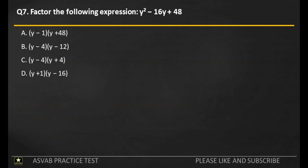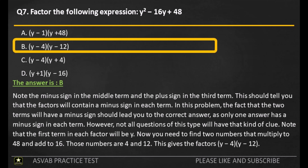Q7. Factor the following expression. A. B. C. D. The answer is B. Note the minus sign in the middle term and the plus sign in the third term. This should tell you that the factors will contain a minus sign in each term. The fact that the two terms will have a minus sign should lead you to the correct answer, as only one answer has a minus sign in each term. Note that the first term in each factor will be Y. Find two numbers that multiply to 48 and add to 16. Those numbers are 4 and 12, giving the factors Y minus 4 and Y minus 12.